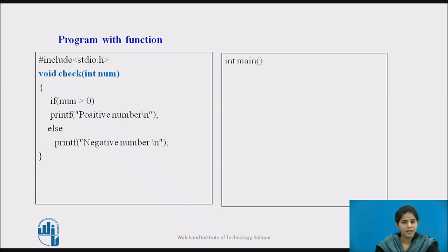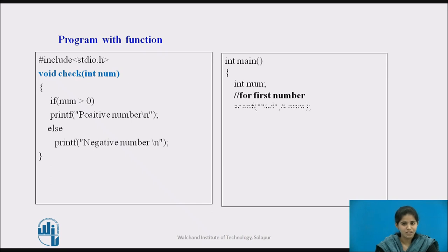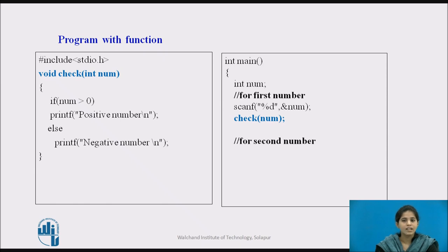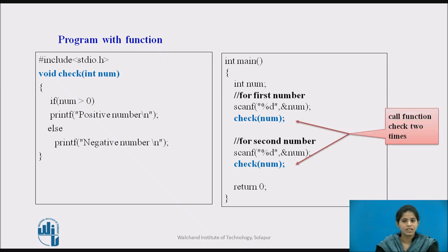We then define the main function. In main, we first declare one integer type variable 'num' for storing the number. We use the scanf function to take the first number from the user, and after that we call the check function to determine whether the number is positive or negative, passing the integer value stored in 'num' to the check function. Here we call the function check two times.